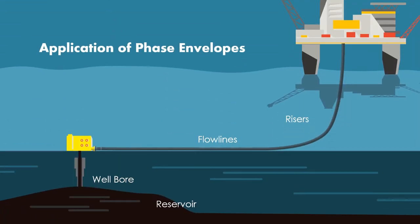Whenever an operator gives us a set of operating conditions — for example, reservoir pressure is 6000 PSIG, the wellhead pressure drops to 3000 PSIG, and the operating pressure at the receiving platform is 1000 PSIG — what flow assurance does is find out the pressures and temperatures all along the flow path, from the reservoir all the way to the wellhead and then to the receiving platform top sides.